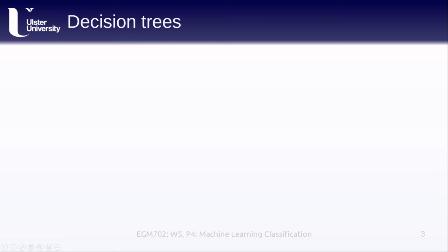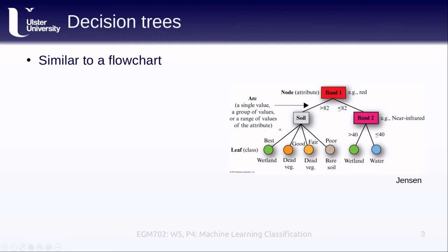Before we get too far into that, though, I want to introduce the topic of decision trees. A decision tree is similar to a flowchart, where we have input data and a series of steps that we follow to determine what to classify that input data as.